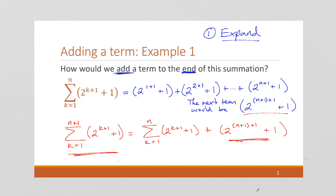As pointed out before, we're using n here, not k. k belongs to the sum. k does not exist outside of the sum — it is the sum variable.